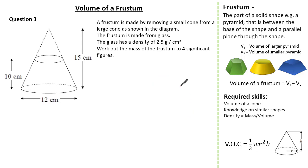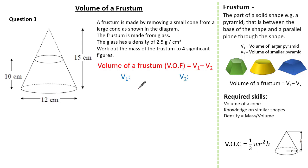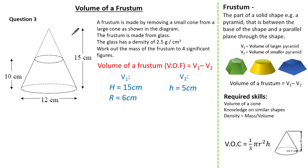Let's apply our formula. To work out the volume of a frustum it's the volume of the larger cone subtract the volume of the smaller cone. For the larger cone we have a height of 15 cm and a radius of 6 cm. For the smaller cone, the height is 5 cm — because if the larger portion is 15 cm and a section is 10 cm, the remaining height is 5 cm. We don't know the radius of the smaller cone, but the scale factor is one-third, so the radius of our smaller cone must be 2 cm.